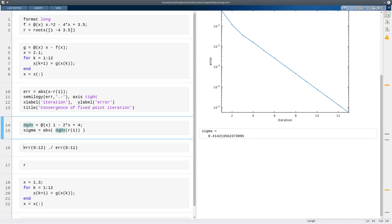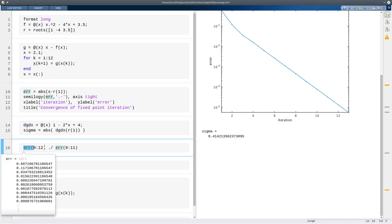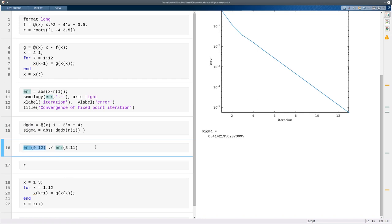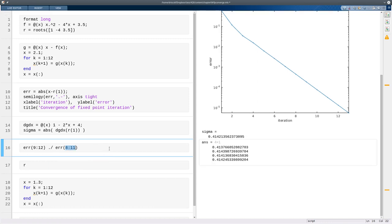Well, we can check that with our observations. So here I'm going to take the 9th through 12th elements of the error sequence and divide those by the 8th through 11th using element-wise division. So this gives me 9 over 8, 10 over 9, and so on. That's the ratio that should be converging to sigma in the limit, and that's what we see. So it's all very explainable.